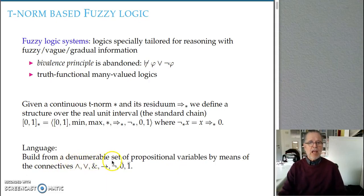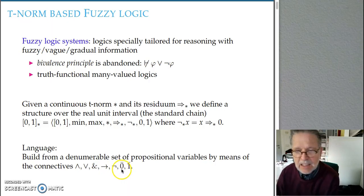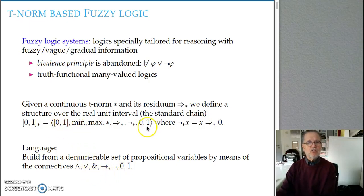The language of this logic is built from a set of denumerable propositional variables by means of the connectives: weak conjunction and disjunction, strong conjunction, implication, negation, and the truth constants for truth and falsity, which correspond to the operations of the standard algebra we have defined.